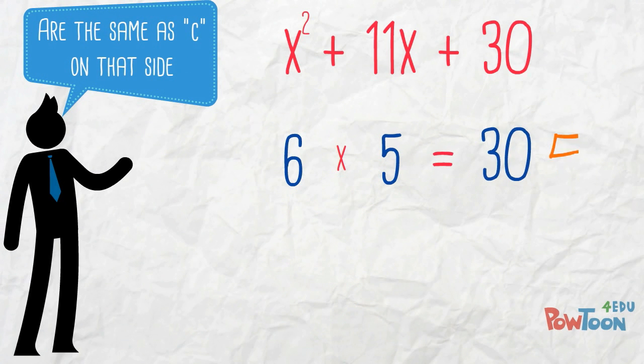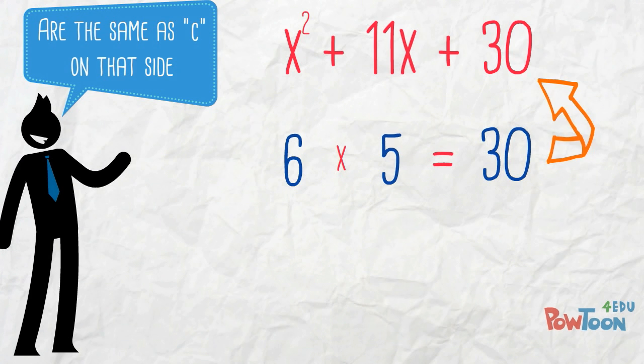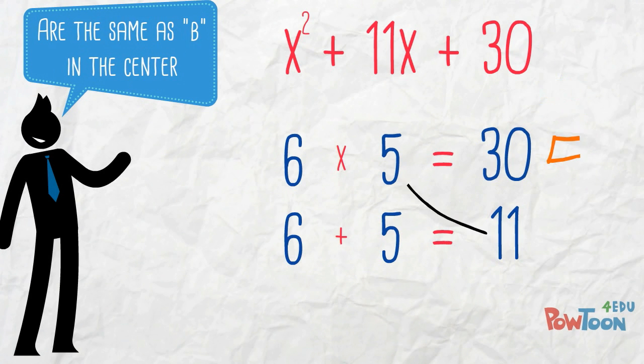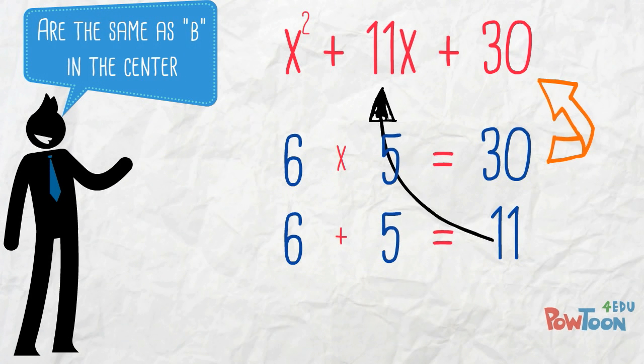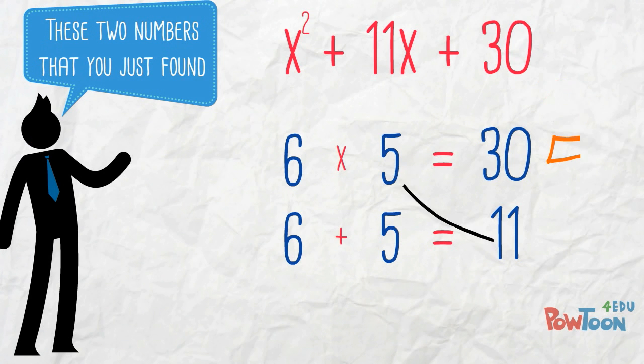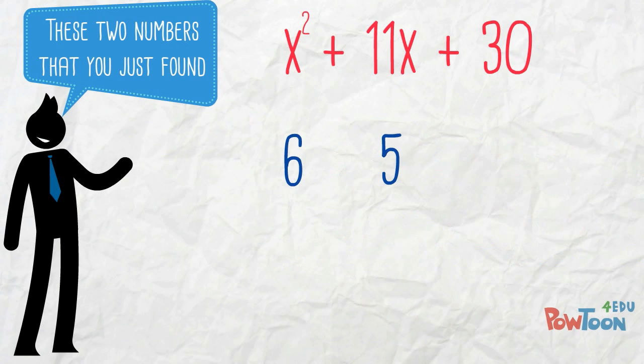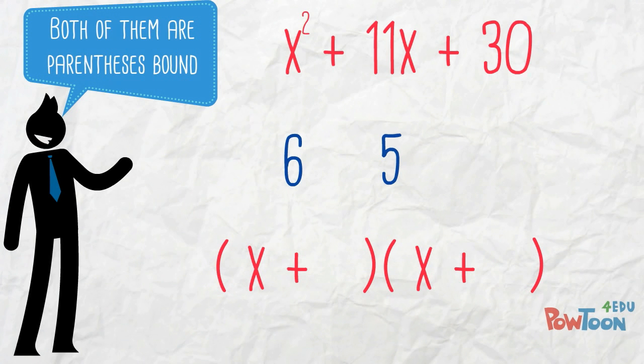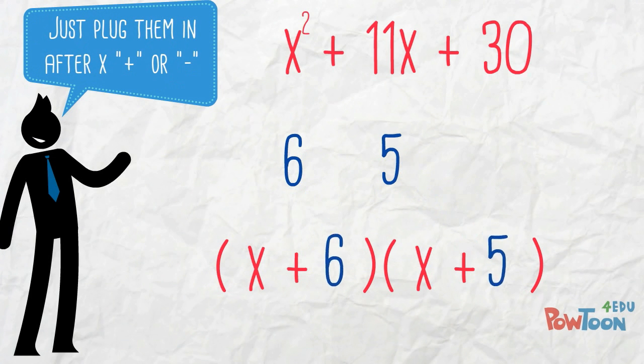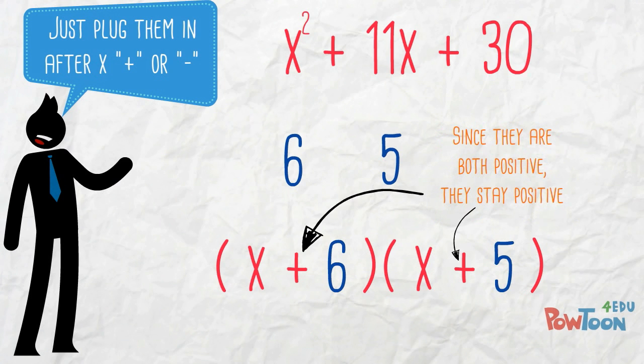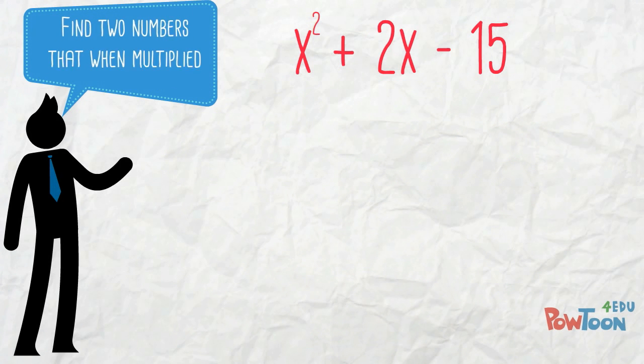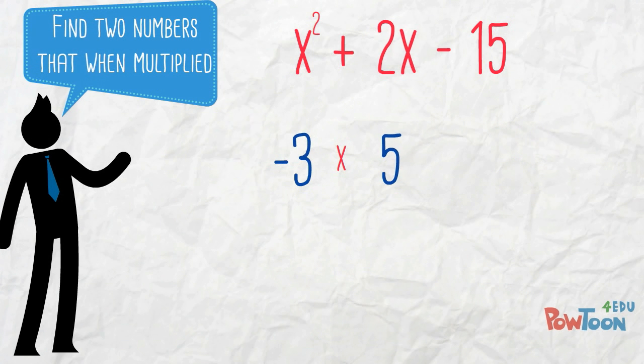Are the same as C on that side. And when you add them together, are the same as B in the center. These two numbers that you just found, both of them are parenthesis bound. Just plug them in after X plus or minus. We call it factoring at its finest.